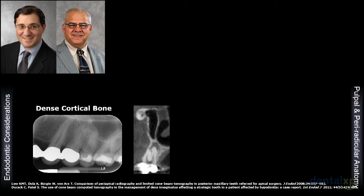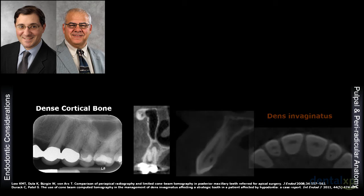This happens to be my hygienist who is having pain at tooth number 13, but on the periapical radiograph it doesn't look all that ominous. However, when you consider the cross-sectional anatomy, it's obvious the palatal root has a periapical pathology, but it hasn't blown through the buccal cortical plate. Because that's intact, you don't appreciate it on a 2D perspective.